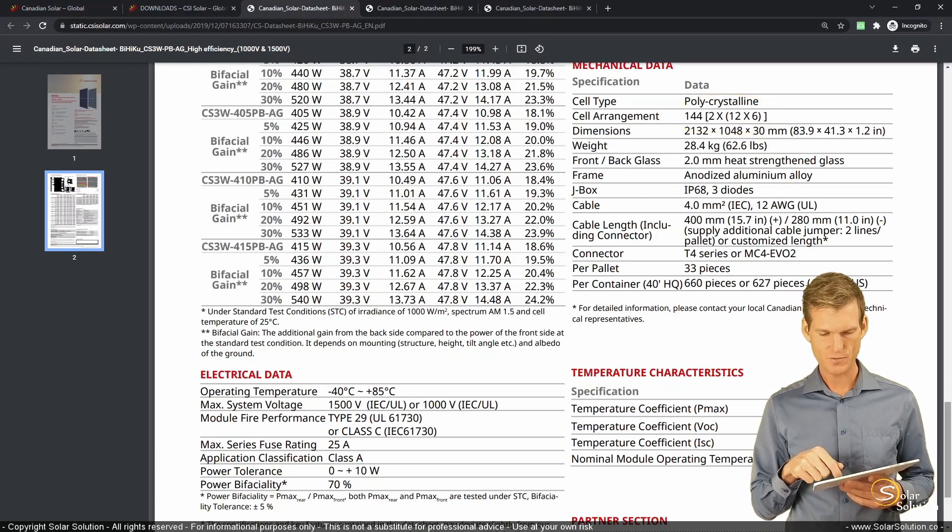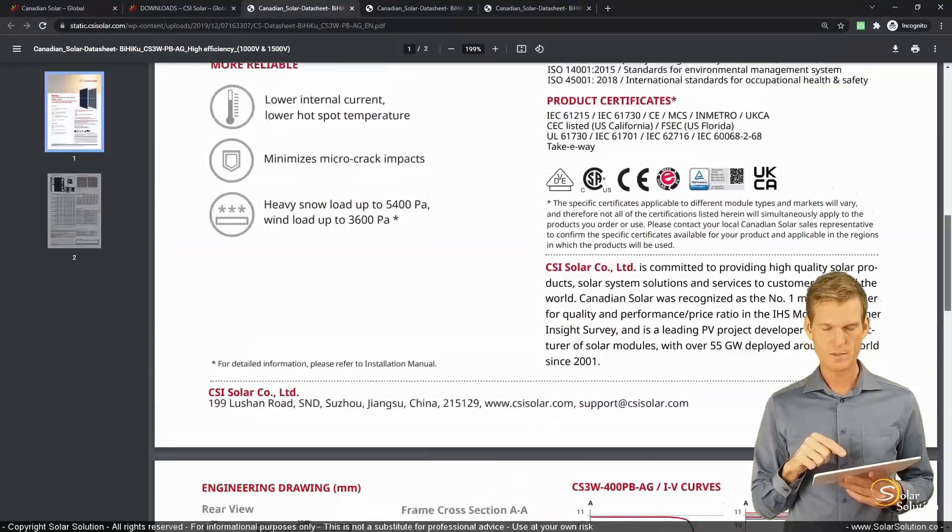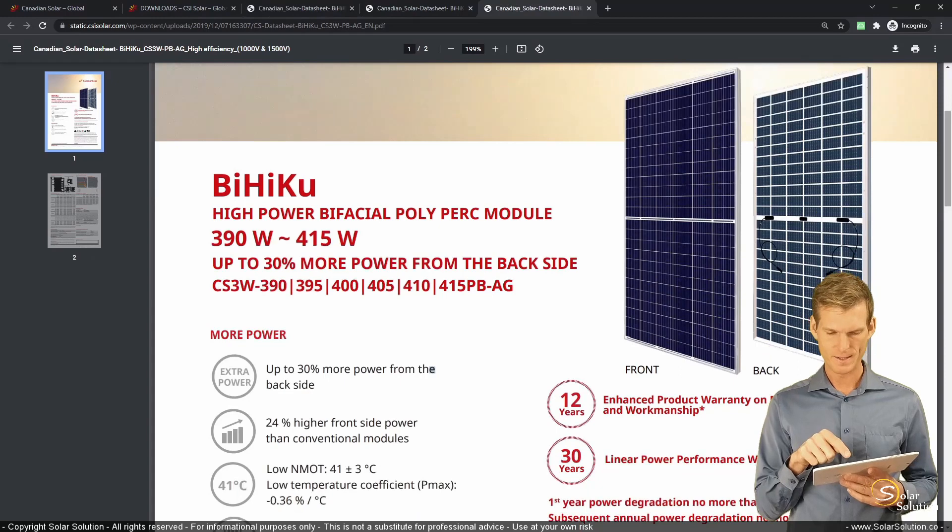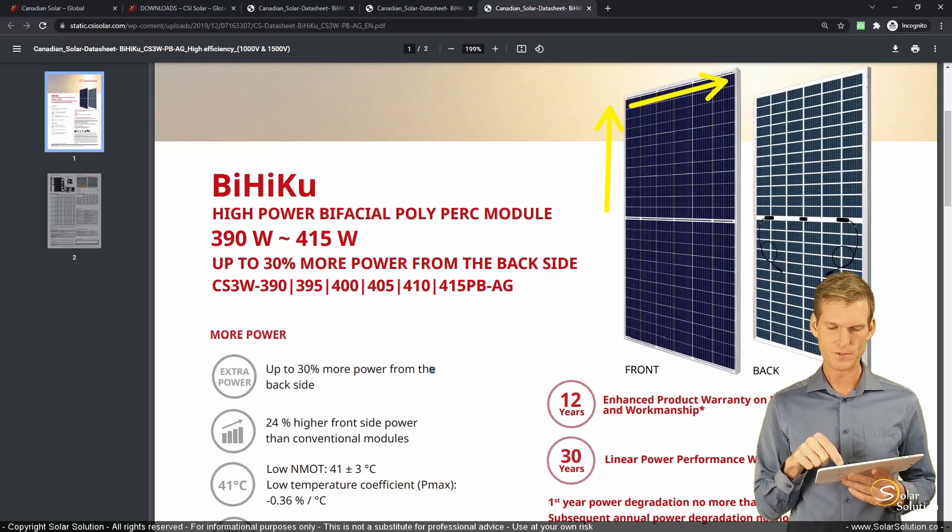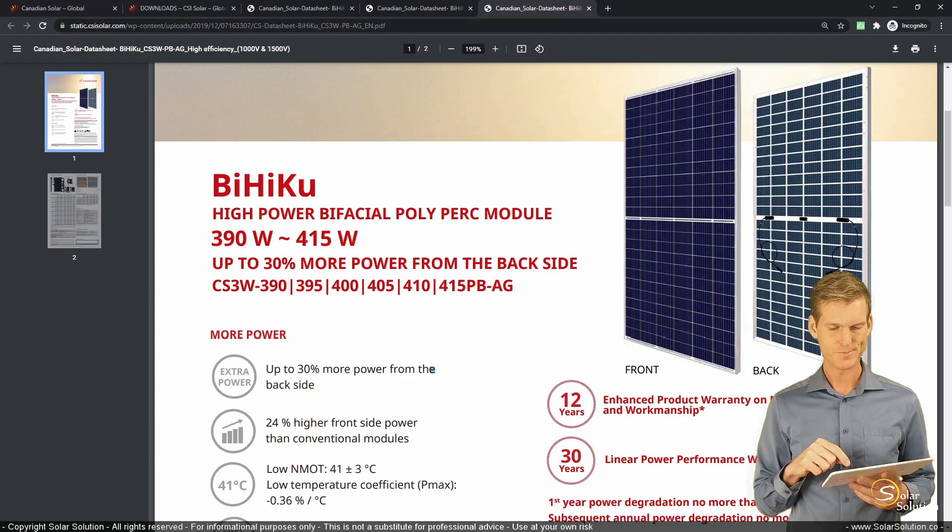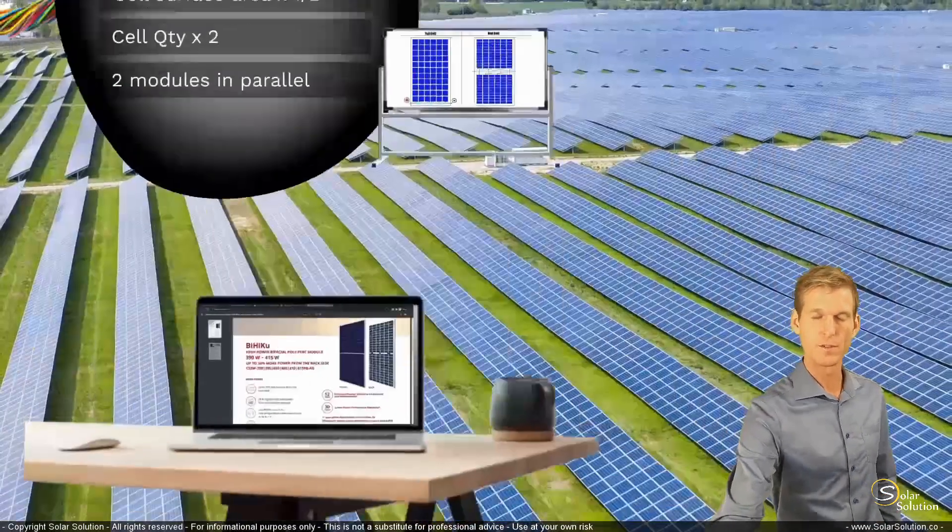And they say it's two times 12 by 6. Now, let's scroll up again and let's look at the panel. So remember, it's two times 12 times 6, which makes sense because if you look at the top part, there are 12 rows and six columns so 12 by 6 makes 72 cells. And then they say, well, double that. So two times 12 times 6 makes 144 half cut solar cells. Okay, so that was a real-life example of a half cut photovoltaic module.